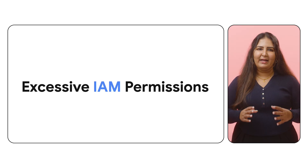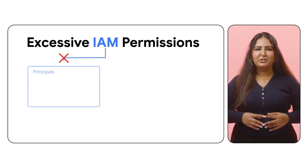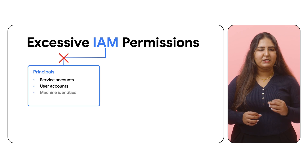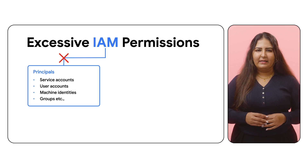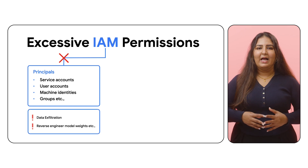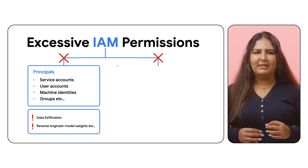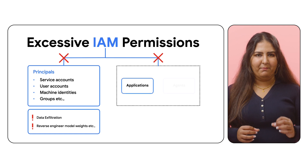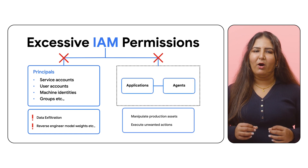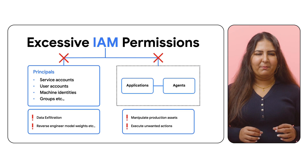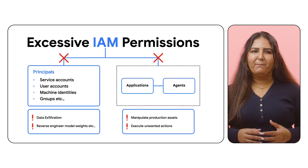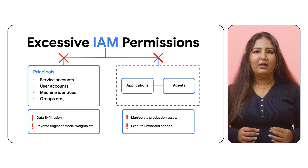Even if your initial model is secure, vulnerabilities can still arise from insecure deployment practices, like granting excessive IAM permissions. Granting identities or principals with access to more data or services than necessary gives rise to threats, including data exfiltration and attacks to reverse engineer model weights. It is also important to limit the IAM permissions granted to applications and plugins that interact with model inputs and outputs, to prevent application vulnerabilities from being exploited to compromise the AI model or its data.